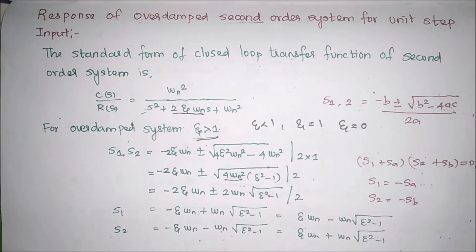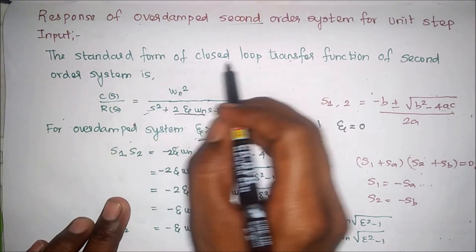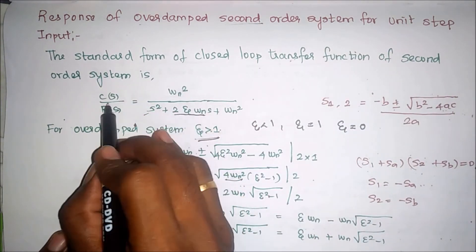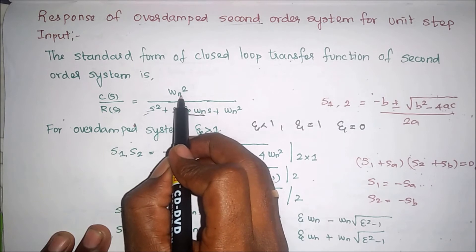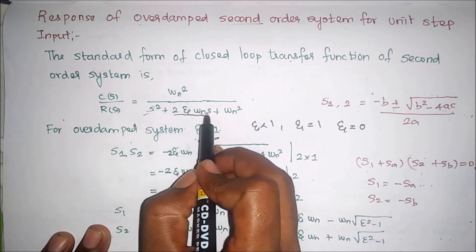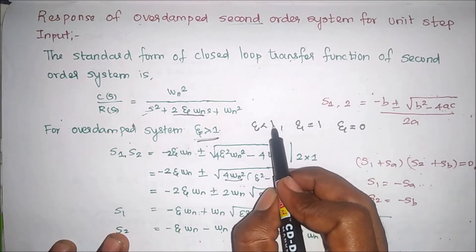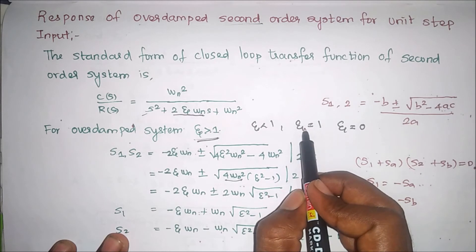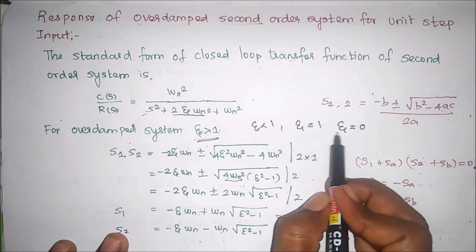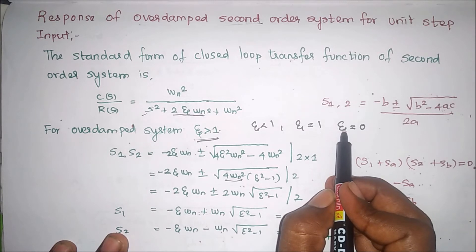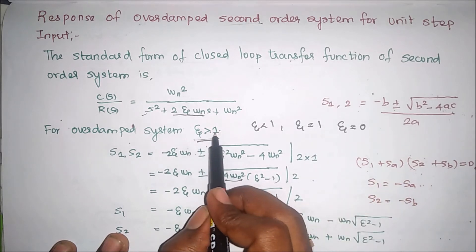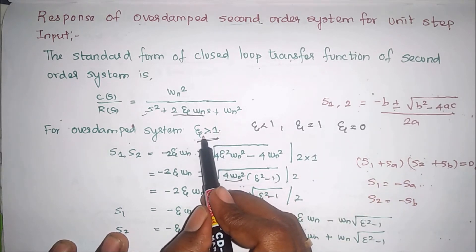In this video we are going to see about the response of an overdamped second order system for unit step input. The standard form of the closed loop transfer function of a second order system is C(s) divided by R(s) equal to omega_n squared divided by s squared plus 2*eta*omega_n*s plus omega_n squared. When eta is less than 1, it is an underdamped system. Eta equal to 1 means critically damped. Eta equal to 0 means undamped. If eta is greater than 1, it is an overdamped system.